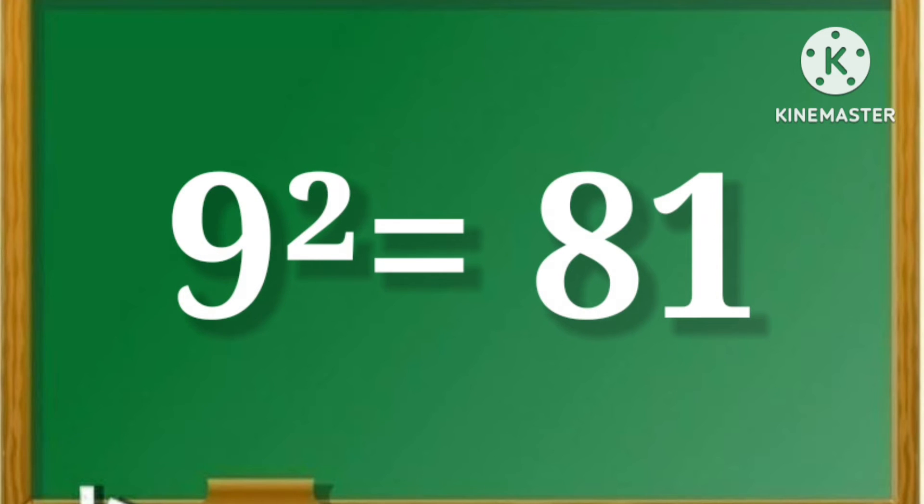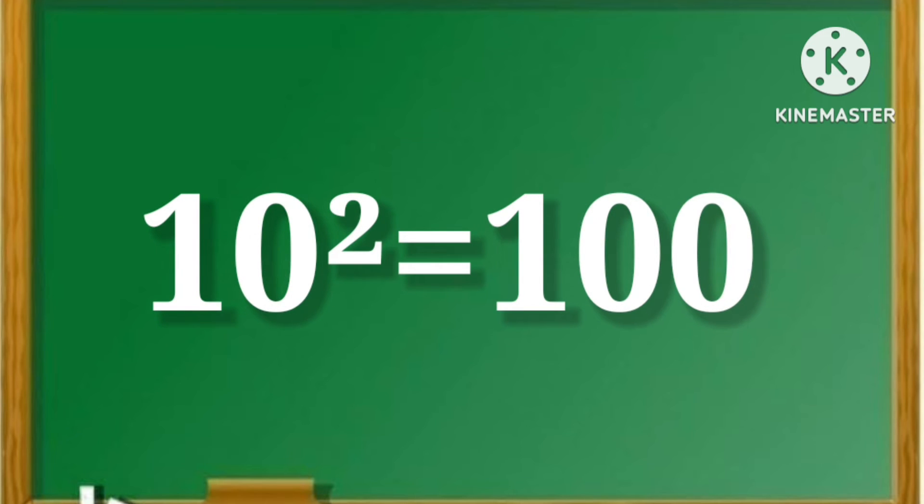9 square is equal to 81. 10 square is equal to 100.